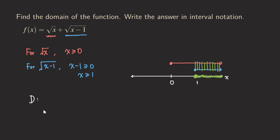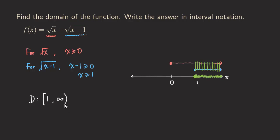We can now write down the domain. Starting with one, we use a closed bracket because we are including the one, then a comma, and we go all the way to positive infinity. Because infinity is not an actual number, we cannot include it — so we always put a parenthesis for infinity. The domain is [1, ∞).